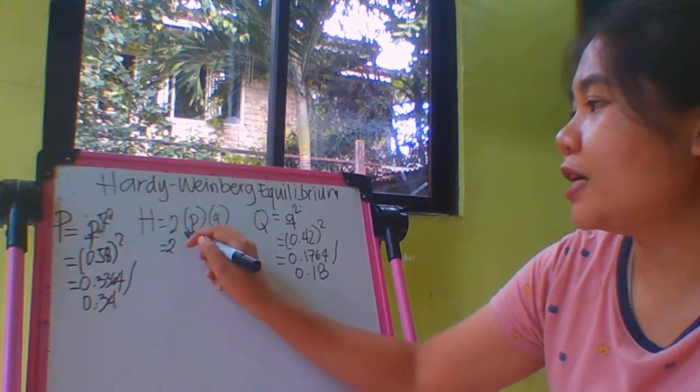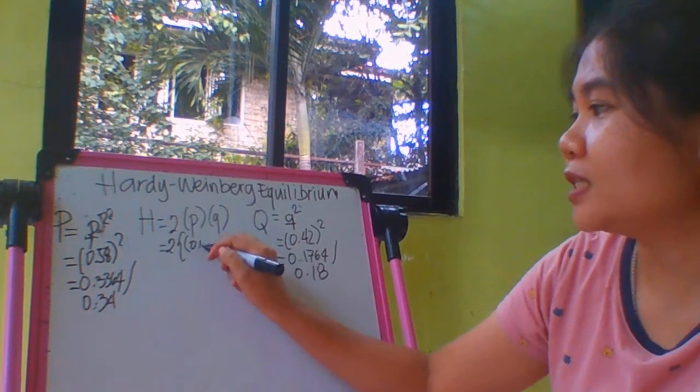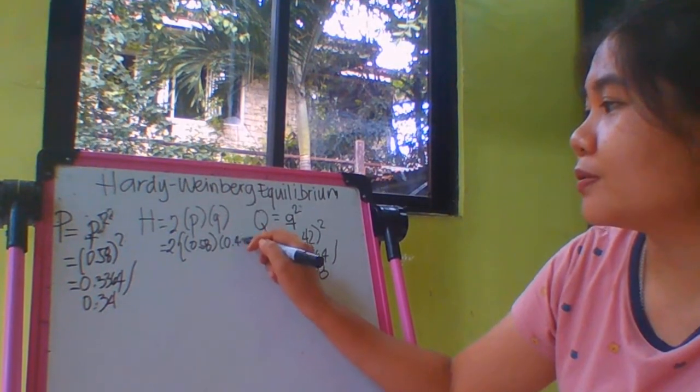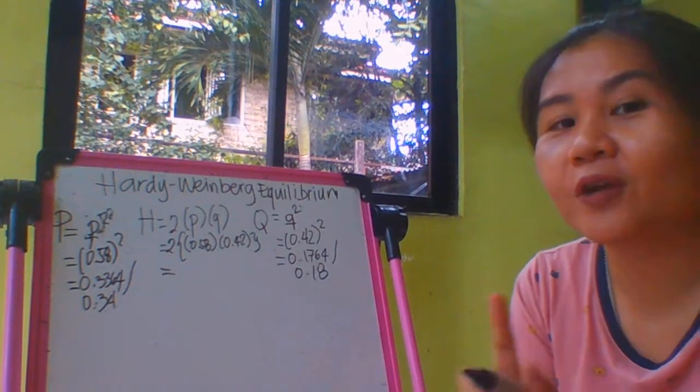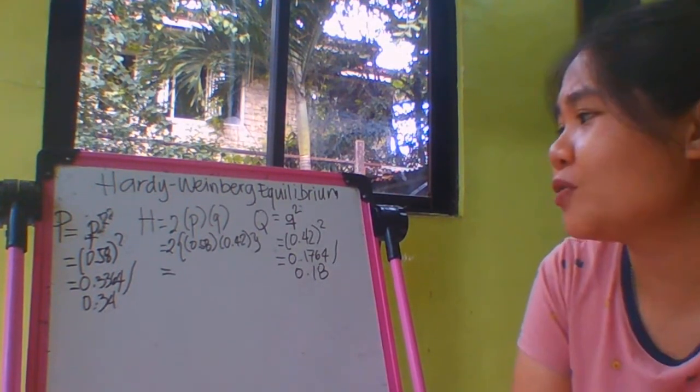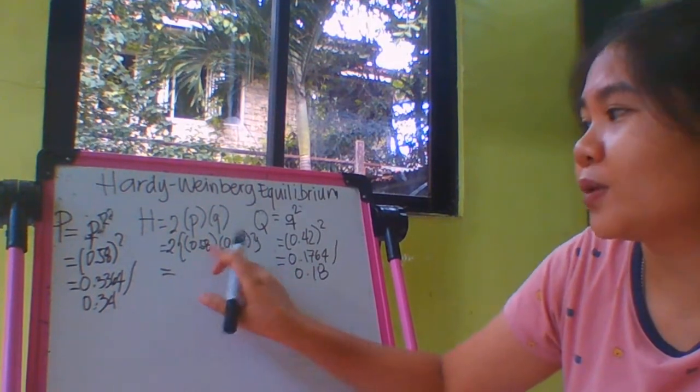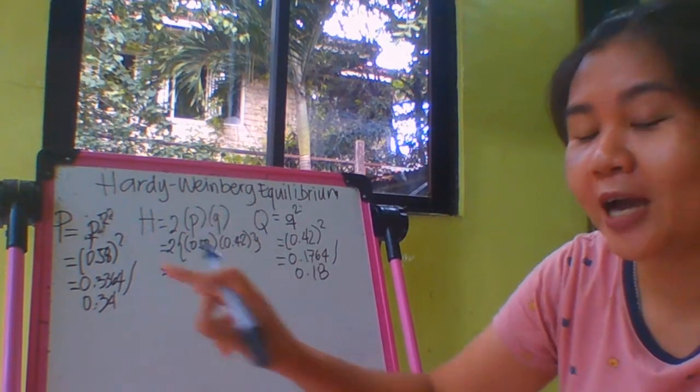Now we're going to solve for letter H. So for letter H, you have 0.58 times 0.42. The rules of math—if you can remember your high school math or even elementary math—you have to solve this one first, going inside before going outside.